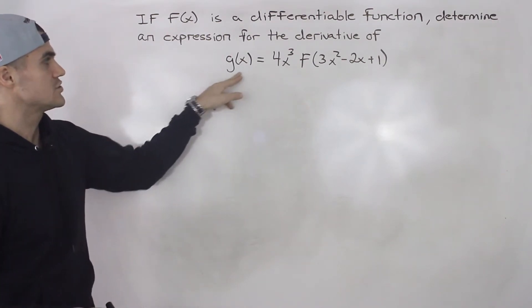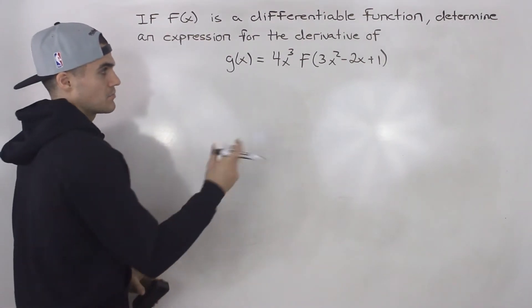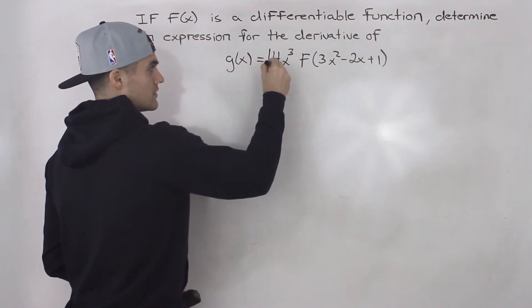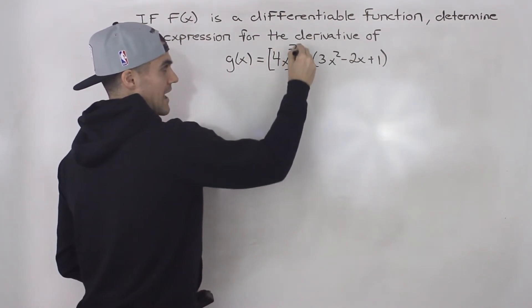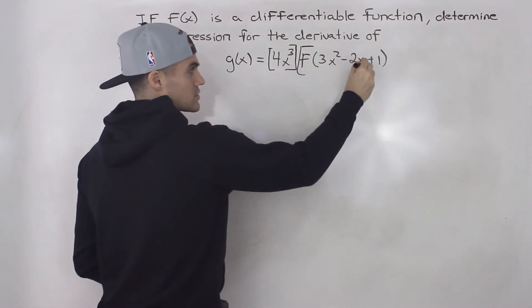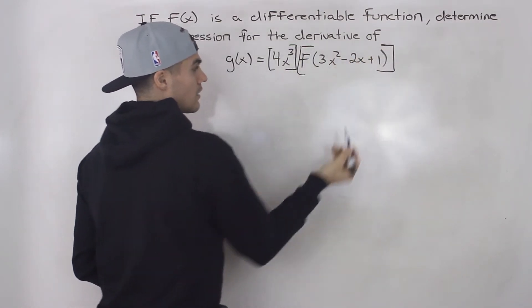Notice this g(x) here is the product of two functions. 4x³ is one function and then this f of 3x² minus 2x plus 1 is another function.